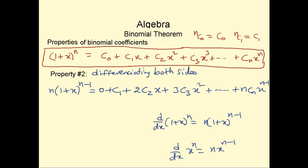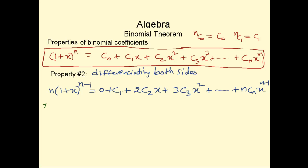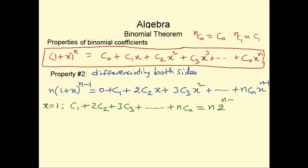Now let's substitute values for x. Let's put x = 1. On the right-hand side you get C1 + 2·C2 + 3·C3 + 4·C4 + ... + n·Cn. On the left-hand side, substituting x = 1 gives n times (1 + 1)^(n-1), which is n times 2^(n-1).